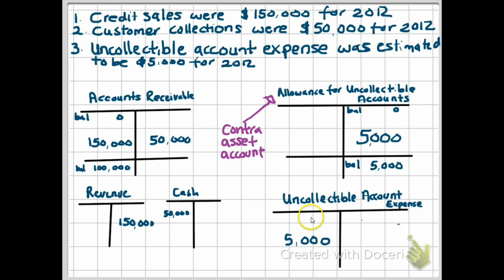The uncollectible account expense is an expense, so it will be reported on your income statement. Under your revenues and expenses, you will have an uncollectible account expense of $5,000. This supports the matching principle — you've made credit sales, and this expense relates to those credit sales. Therefore, we show it in the period it was incurred, which is the same period the revenues were earned. So the allowance method supports the matching principle.